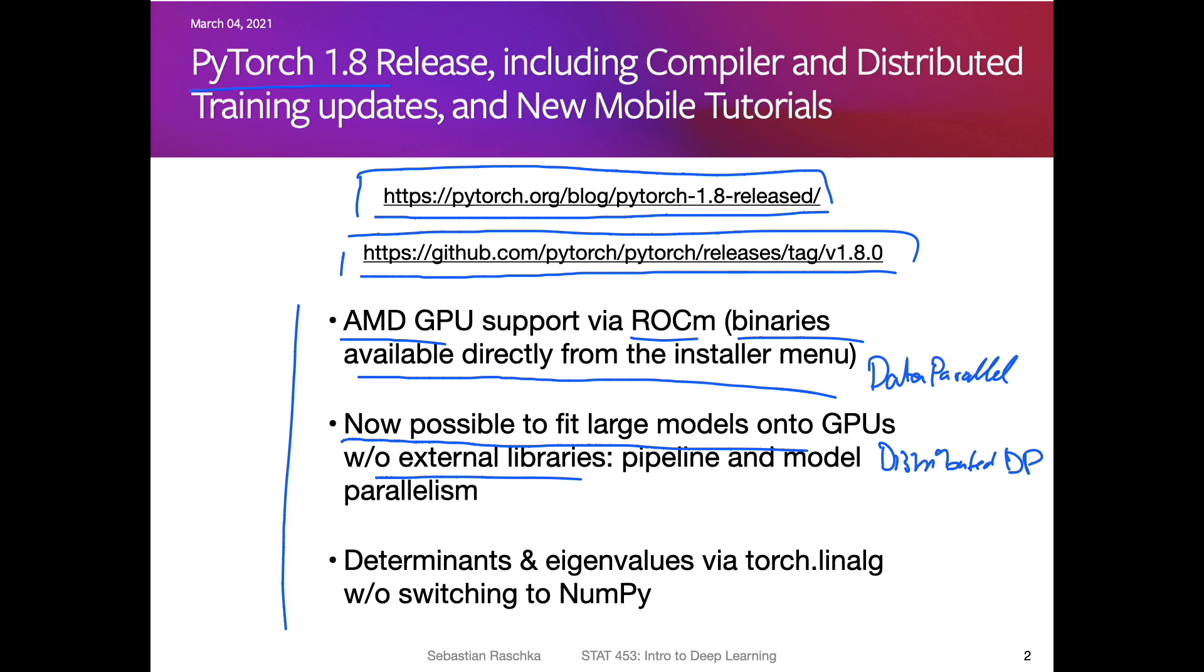One method that we discussed was checkpointing, but the checkpointing would be using a single GPU. Now there's a way that you can conveniently put a single model onto multiple GPUs and then run it in parallel. So that's actually pretty cool - you don't need any external libraries for that. There are now some features that support it directly in PyTorch. And then also what's kind of nice is that the torch.linalg module got extended. There are now additional linear algebra functions that are usually only in NumPy. So now we don't have to switch so often between NumPy and PyTorch when we train our neural networks if you need something like determinants or eigenvalues and so forth.